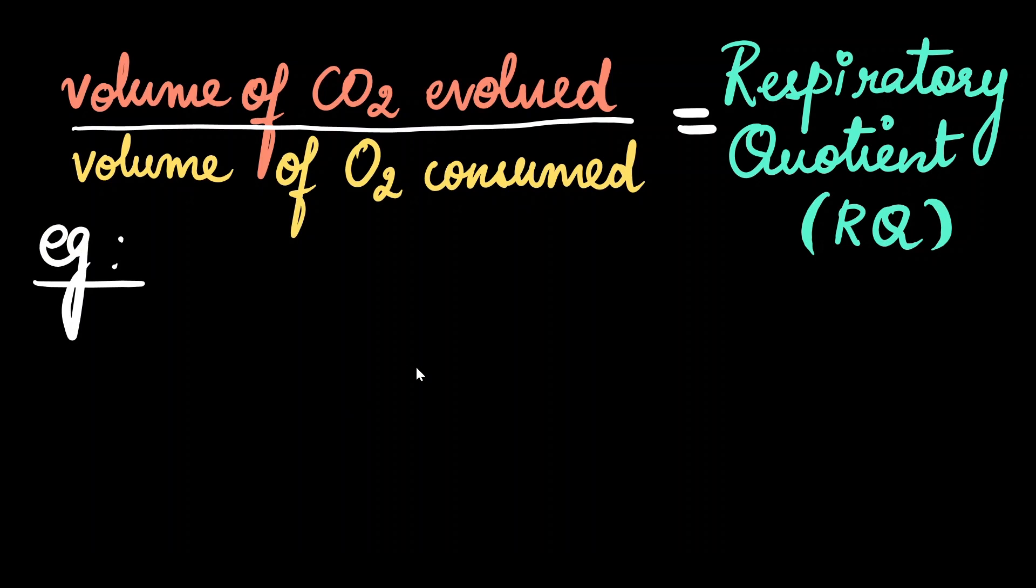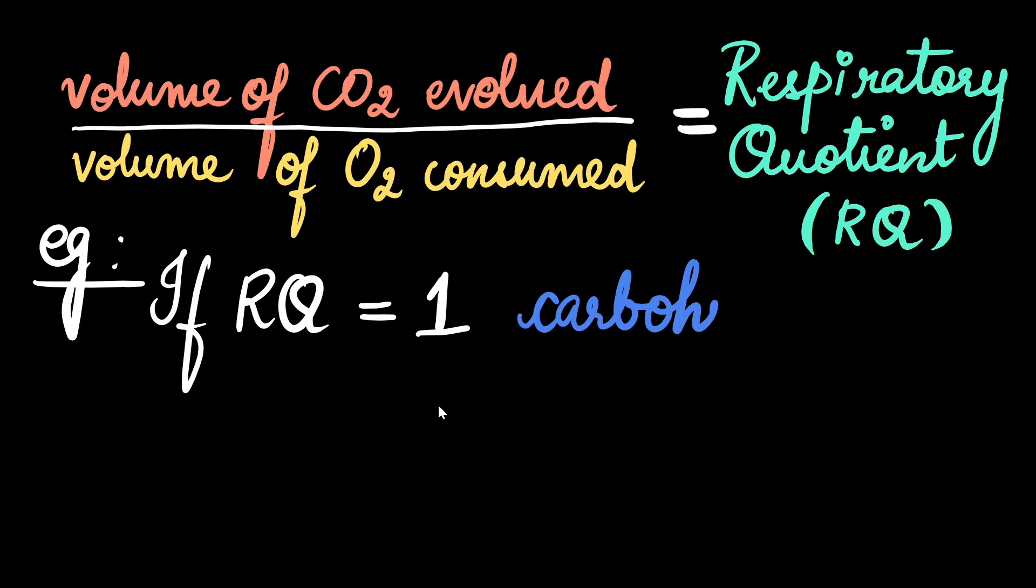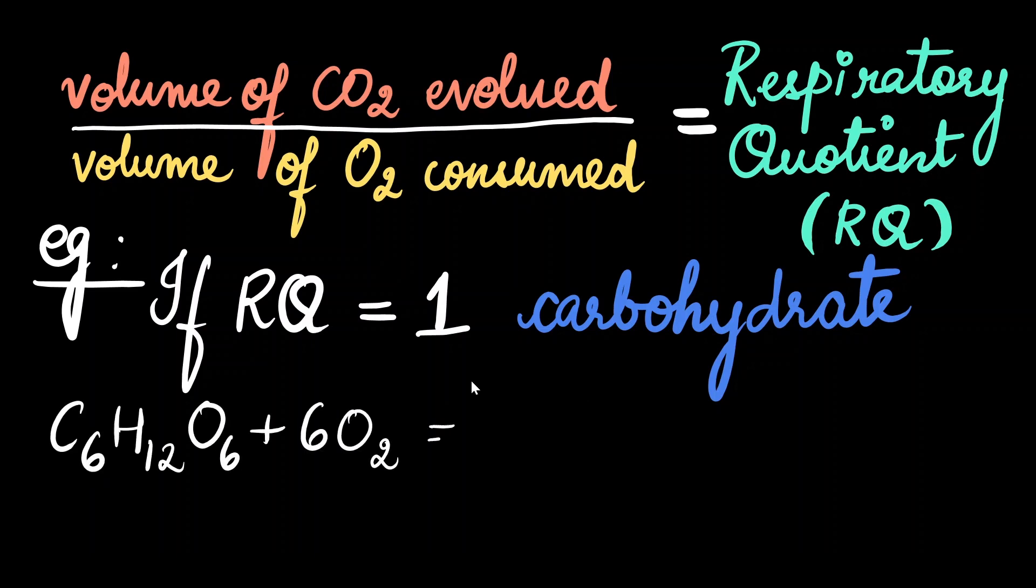So, for example, after an RQ calculation, we get a value of 1. It means the body is primarily burning carbohydrates for its energy. So, metabolically, the reaction might look something like this.